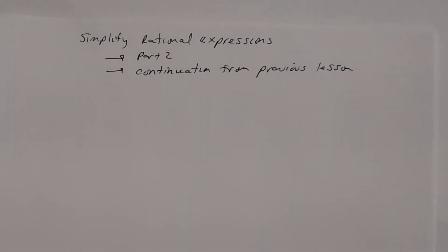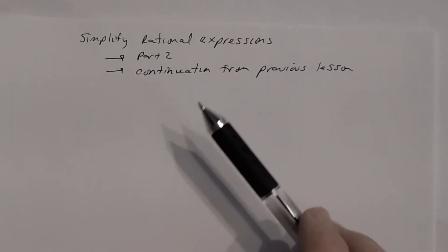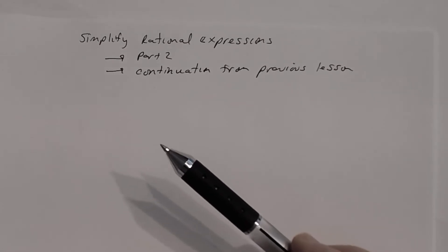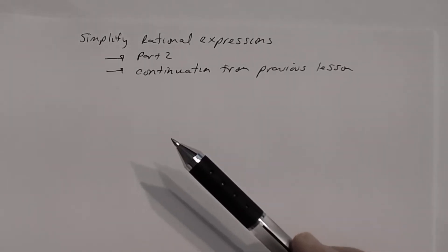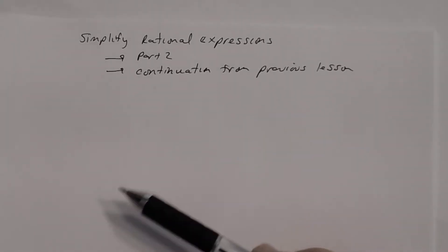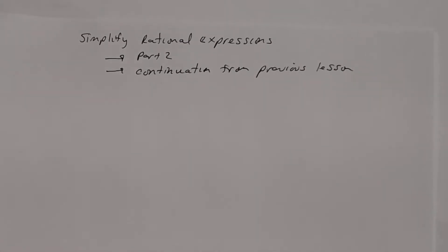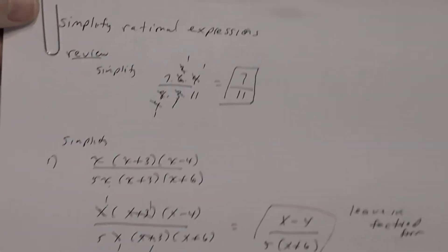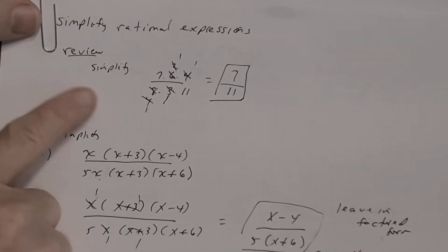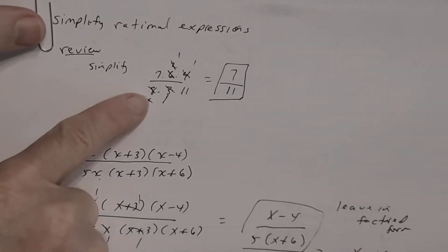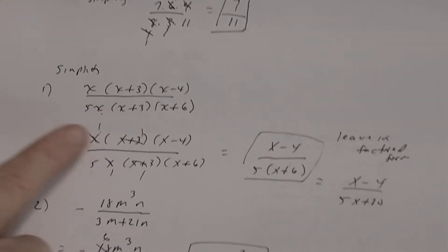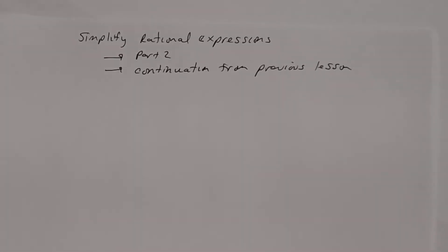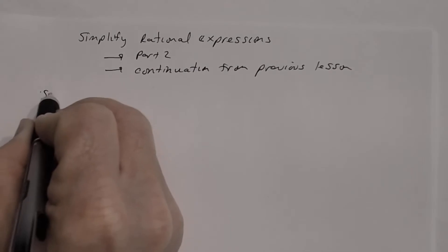This is the second part of our lesson on simplifying rational expressions. I divided it into two parts because of the number of problems I wanted to work out. This is a continuation from the previous lesson, so make sure you go back to that lesson because that's where we started with an example review and a simple example.